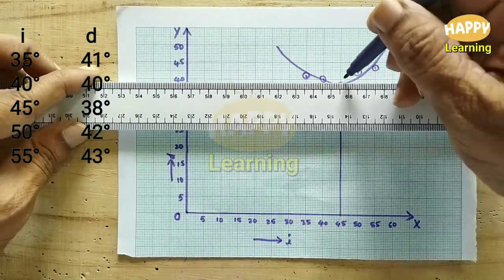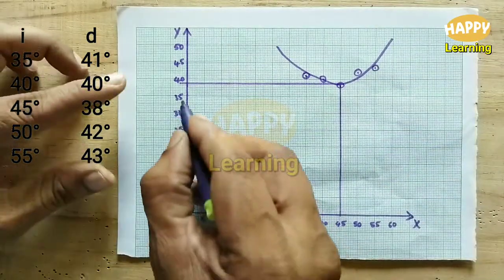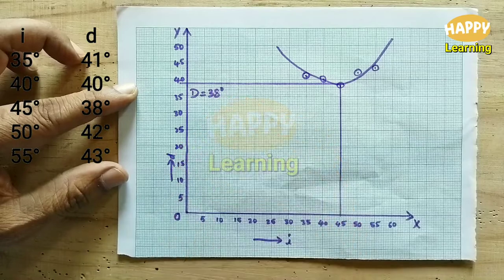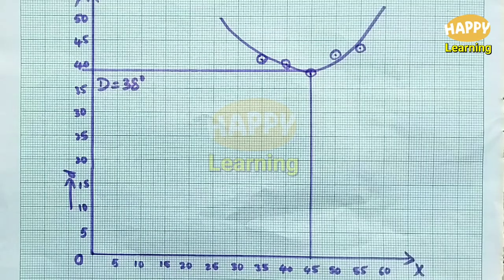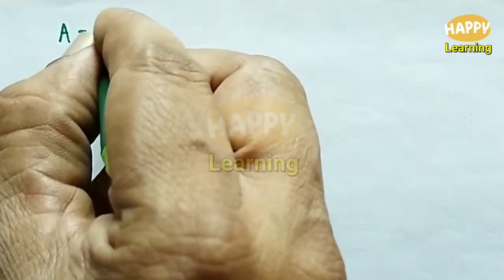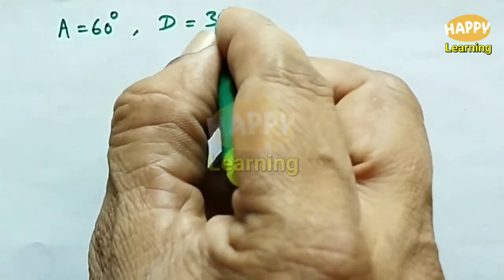The corresponding Y-axis value at the bottom-most point is the minimum value among all D values, which is called the angle of minimum deviation. Here it is 38 degrees, represented by capital D. Since the prism is equilateral triangle shaped, the angle A of the prism is 60 degrees, and from the graph the angle of minimum deviation is 38 degrees.